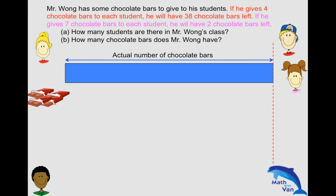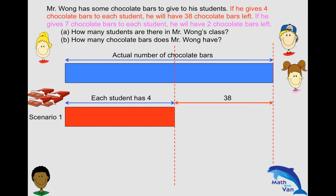So in scenario one, if he gives four chocolate bars to each student, he will have 38 chocolate bars left. So he did not use up all the chocolate bars — there is an extra 38 chocolate bars. So this is what we mean by the excess. This is the amount of chocolate bars that he used to give each student four chocolate bars.